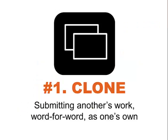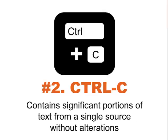Plagiarism falls into ten different types. The first type is clone — that means you submit another's work word for word as your own. The second type is called Ctrl-C, which comes from the computer keyboard shortcut for copy. It contains significant portions of text from a single source without alterations.